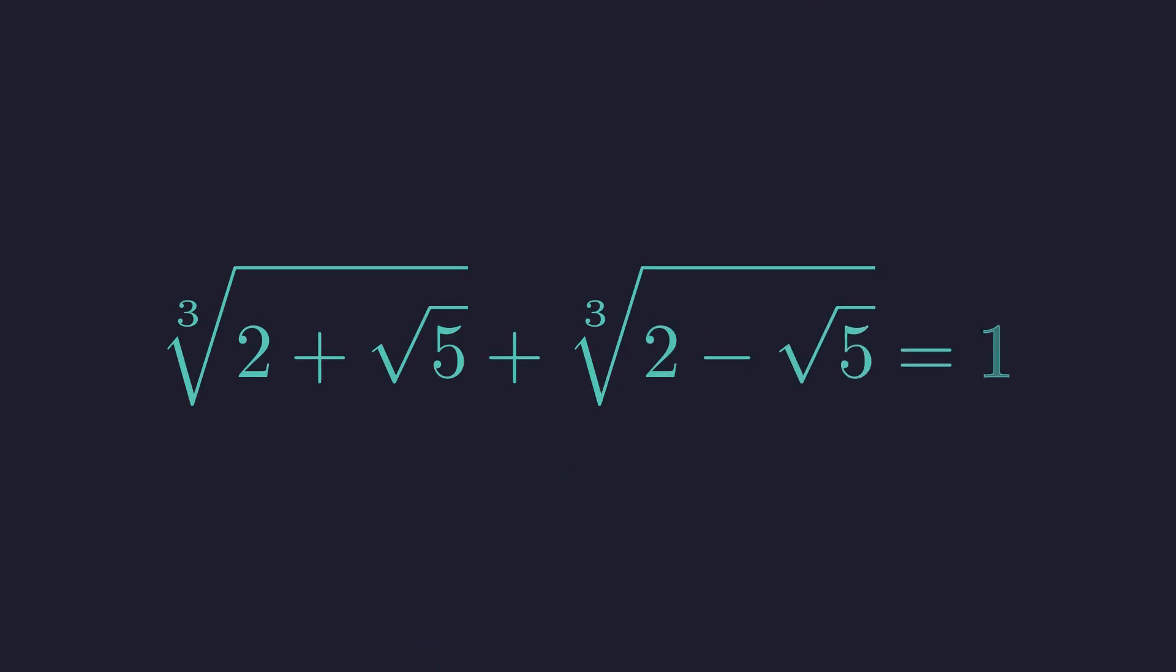So after all that work with nested radicals, clever algebra, and polynomial factoring, we arrive at this beautifully simple result. That chaotic expression equals exactly 1.